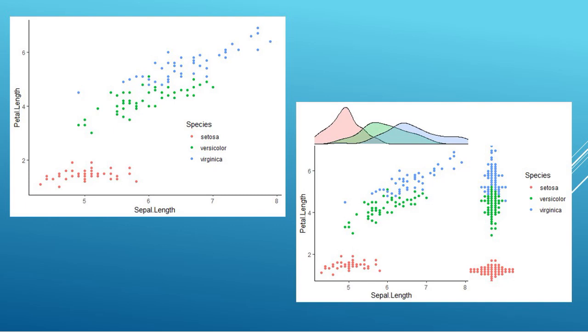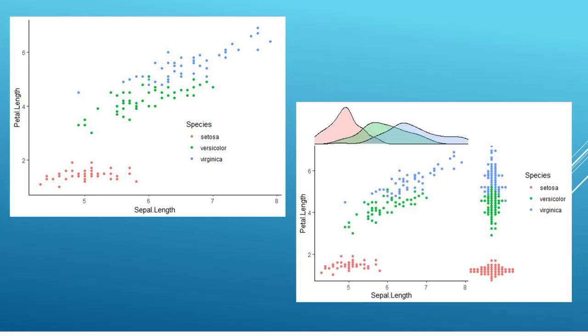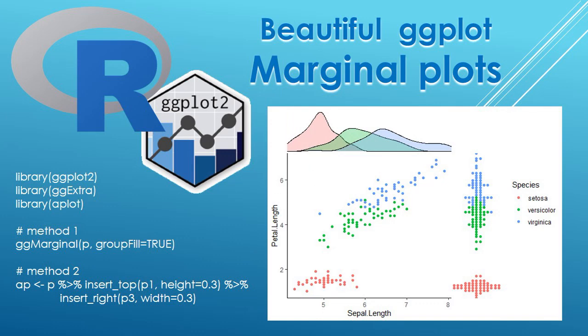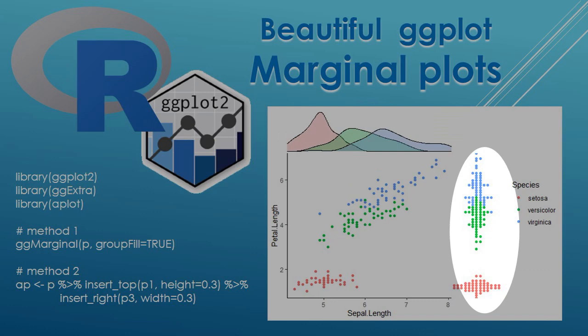Welcome to this session on visualizing data using ggplot2 and allied functions. Which plot is more beautiful and informative — the one without marginal plots or the one with marginal plots? Marginal plots are plotted above or around the main plot and show the distribution of the data on the x-axis or y-axis.